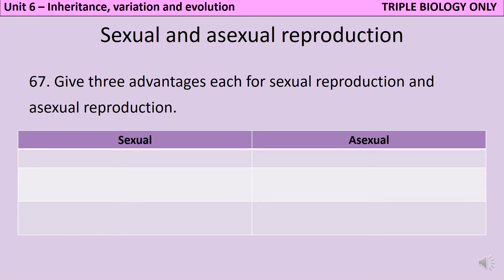The first topic in Unit 6 that has some content that only comes up in the GCSE Biology exams is sexual and asexual reproduction. While you need to know about the differences between these methods of reproduction for the combined science exams, for GCSE Biology you also need to be able to describe why using each method of reproduction might give you an advantage.